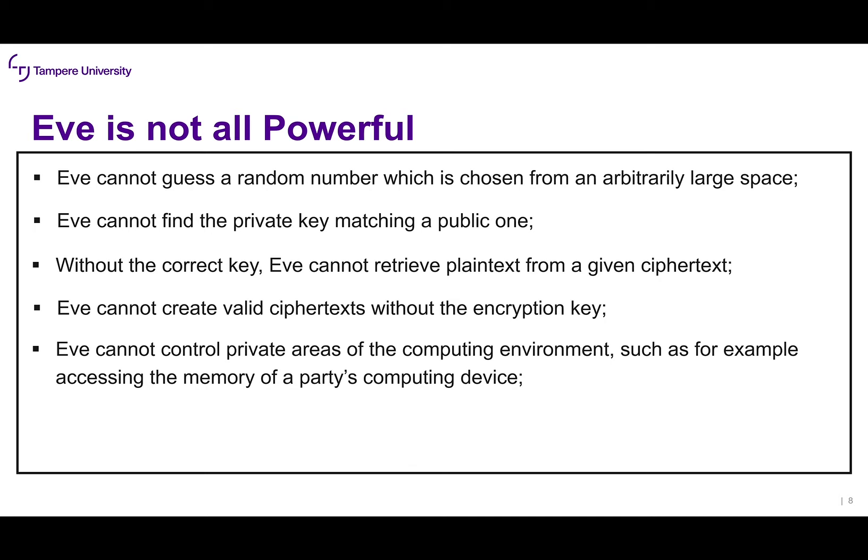Now that we've described what Eve can do, let's see what Eve cannot do. Eve is not all-powerful. She cannot guess a random number chosen from an arbitrarily large space. She cannot find the private key matching a public one — we always assume the secret key will remain secret. Without the correct key, Eve cannot retrieve plaintext from a given ciphertext, and she cannot create valid ciphertext without the encryption key.